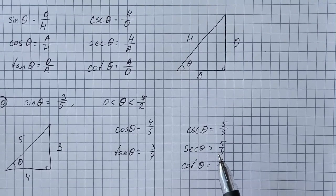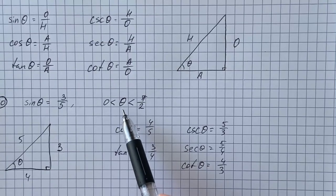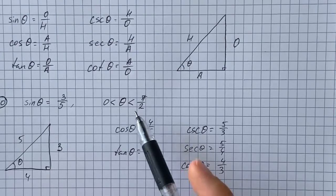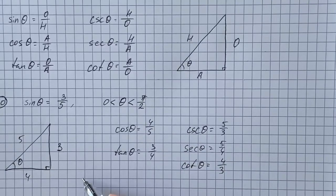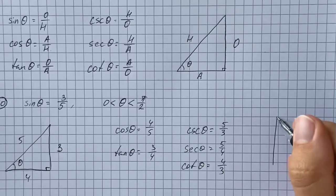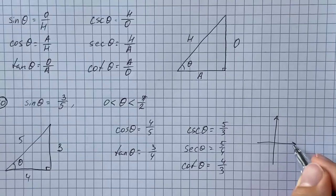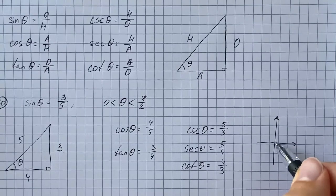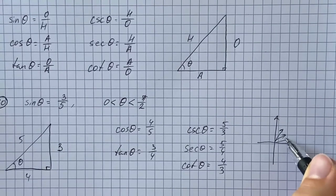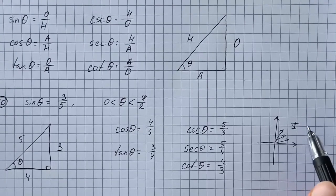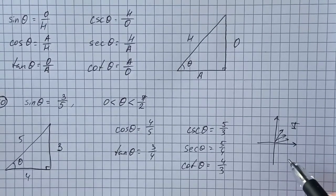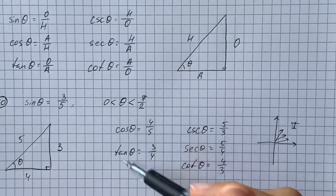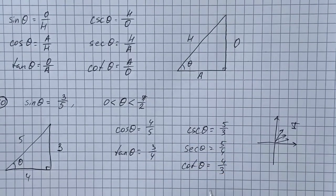Since the angle is between zero and pi over two, it lies in the first quadrant on the unit circle. In the first quadrant all trig functions are positive, so we don't need to change any signs. Those are our final answers.